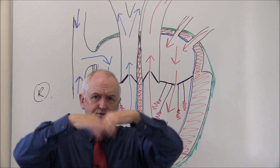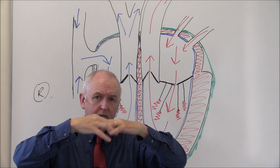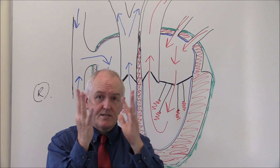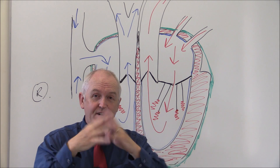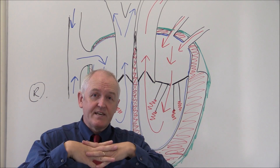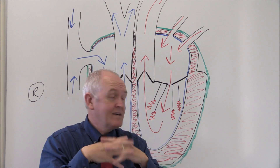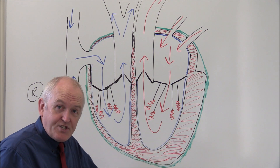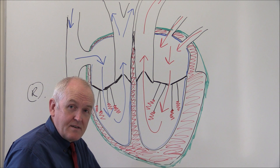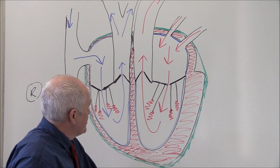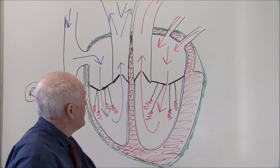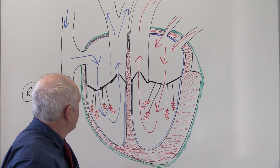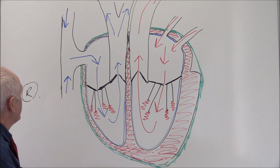The atrioventricular valves open and close in one direction, and the semilunar valves open and close in the other. The valves are not actively contracting - they're opening and closing as a result of pressure changes developed by the contraction of the heart and the venous return of the blood. The same situation occurs on the other side.